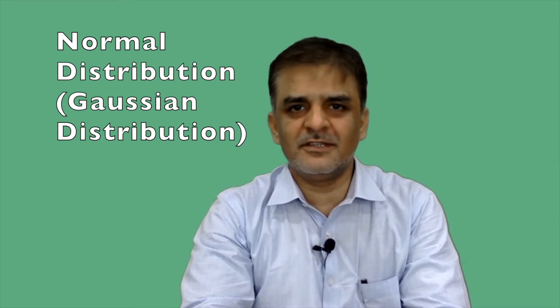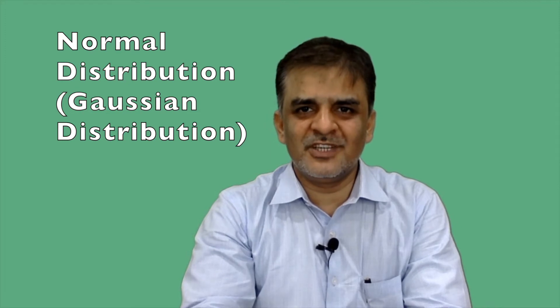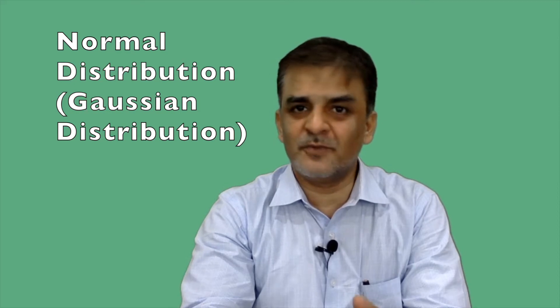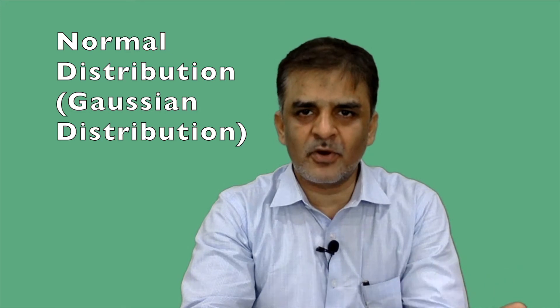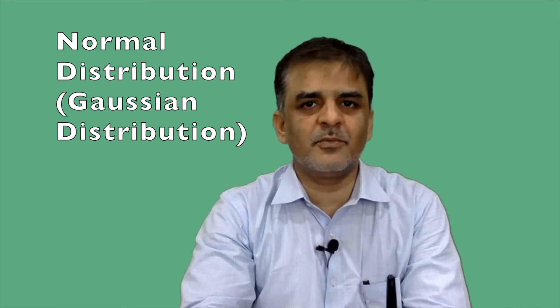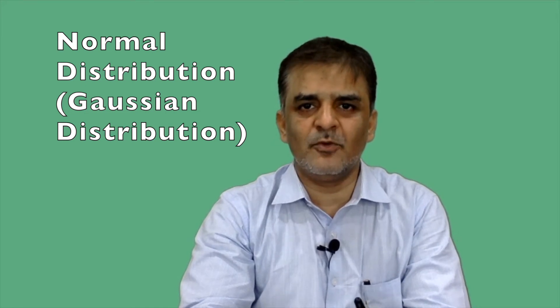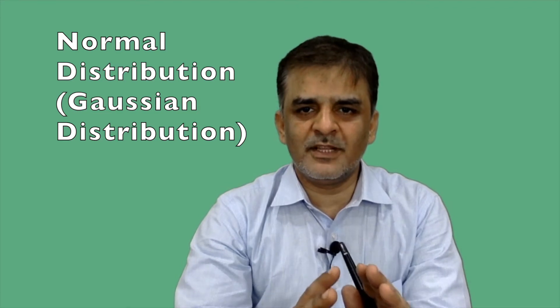Welcome friends. The most important distribution, which we call normal distribution or the Gaussian distribution — I want to share some of my understanding with you about this distribution. It is very common, very useful, and sometimes we use it as an approximation method even for some of the discrete probability distributions, like the binomial distribution.